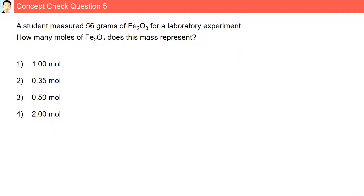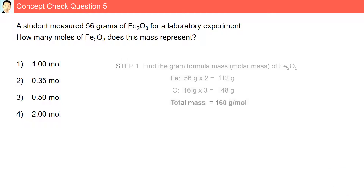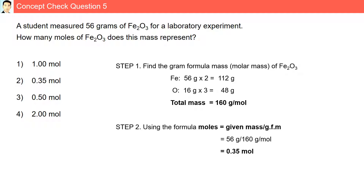Question 5: a student measured 56 grams of Fe2O3, iron(III) oxide, for a laboratory experiment. How many moles of Fe2O3 does this mass represent? The gram formula mass of Fe2O3 is 160 grams per mole. Dividing 56 grams by 160 grams per mole gives 0.35 moles — answer choice 2.